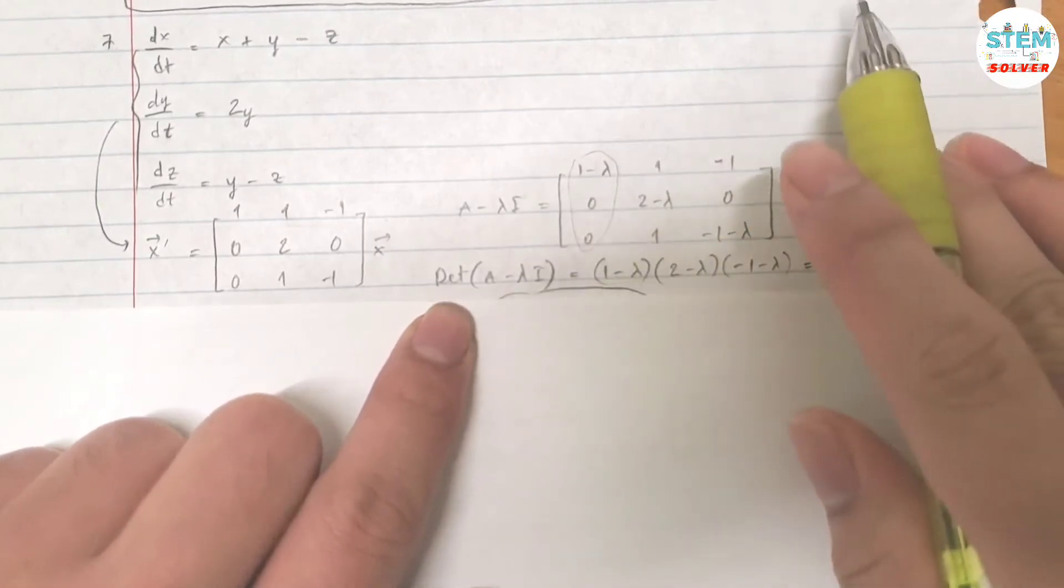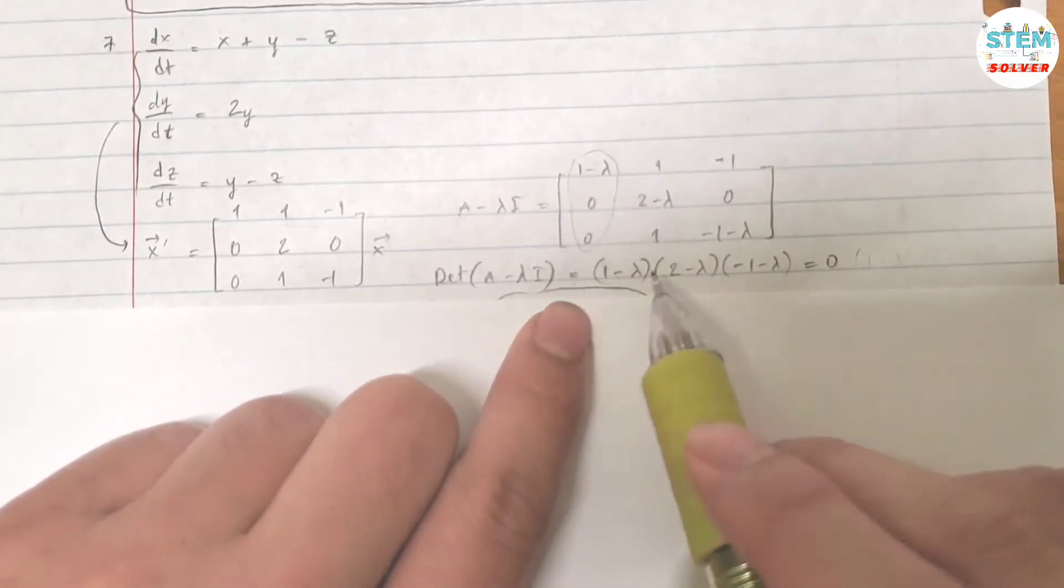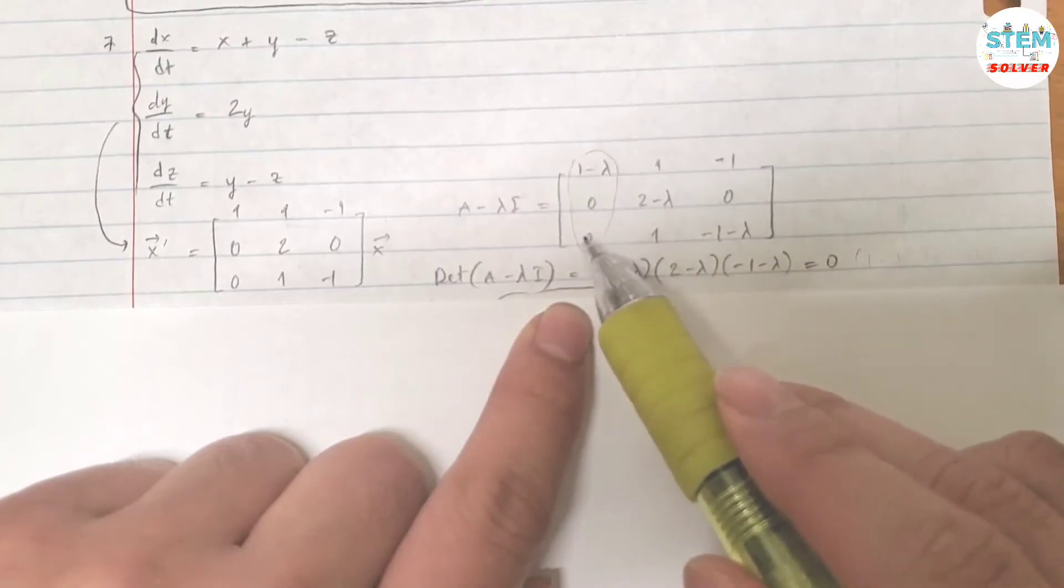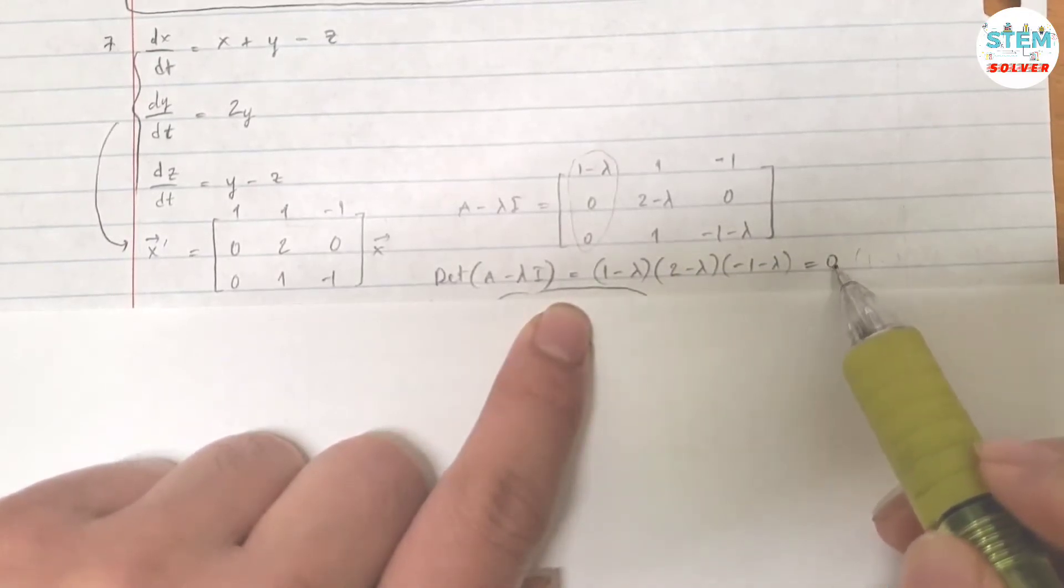So I have 1 minus lambda times 2 minus lambda times negative 1 minus lambda minus 0, and then minus 0 plus 0. Then set it equal to 0.